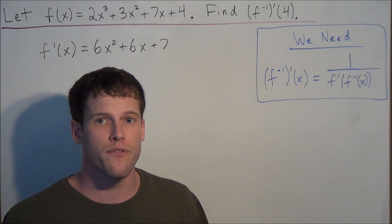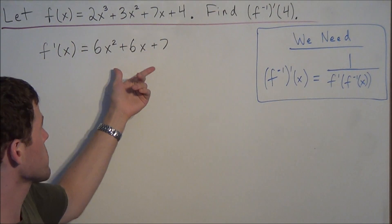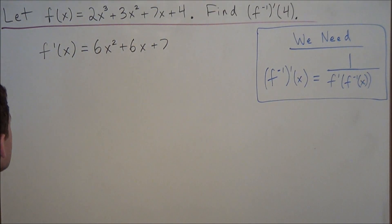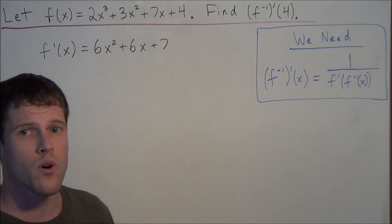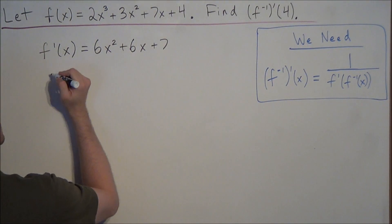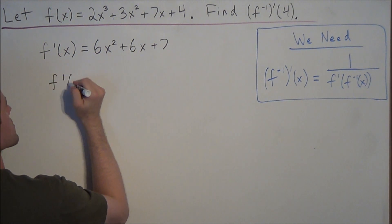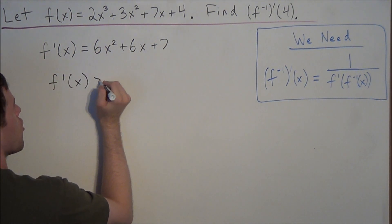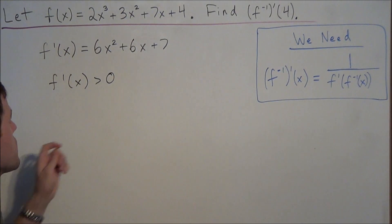So the first thing we need to show is that f is differentiable, which because it's a polynomial we can find its derivative, and also we need to show that f is a 1 to 1 function. And the way we could do that is just showing that f prime of x is always greater than 0.